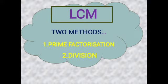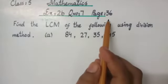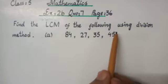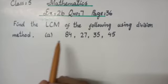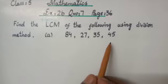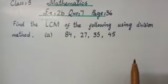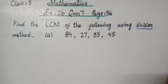Now, for understanding these methods, we are going to move towards our working board. This is question number 7, Page number 36. Find the LCM of the following using Division Method. We are going to solve part A, which is 84, 27, 35 and 45. Hamei LCM find out karna hai by using Division Method. For using Division Method, I first have to draw some lines.